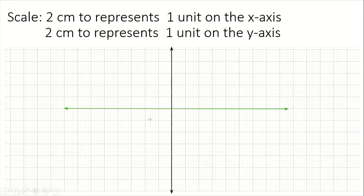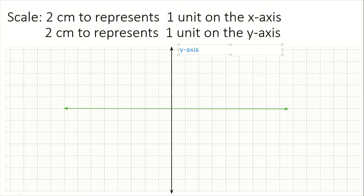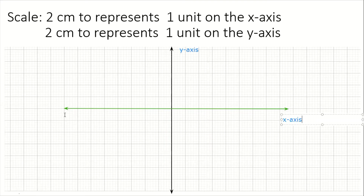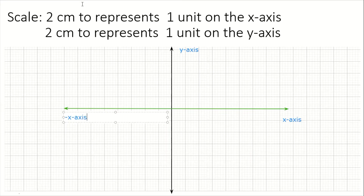Now that you have drawn your two lines, label them. This vertical one is going to be our y-axis, and this horizontal one is going to be our x-axis. Label each end — over here is the negative x-axis, and down here is the negative y-axis.